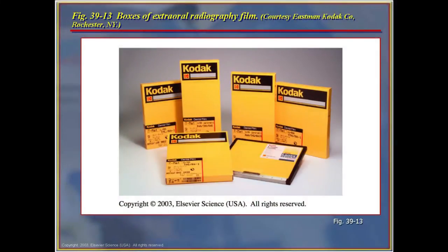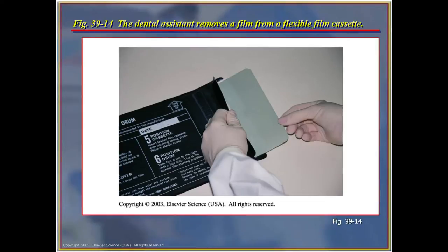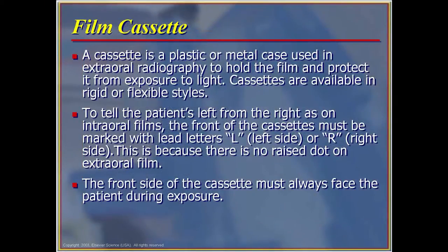These are the different types of boxes that hold the film, depending on the size and what procedure we're doing. The cassette which holds the film — you take the film out of the box in a light-secured place and place it inside the cassette. The cassette is plastic or metal and is used in extraoral radiography to hold the film and protect it from exposure to light. Cassettes are available in rigid or flexible styles depending on the manufacturer. To tell the patient's left from right, the front of the cassette must be labeled L and R, and the front side must always face the patient during exposure.